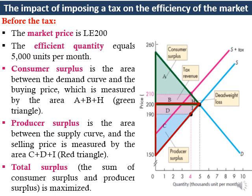Producer surplus can be measured as the area between the supply curve and the selling price. In this case, producer surplus equals the sum of areas C plus D plus I, represented by the red triangle in the figure. Finally, the total surplus before imposing the tax — which equals the sum of consumer surplus and producer surplus — is maximized in this case.